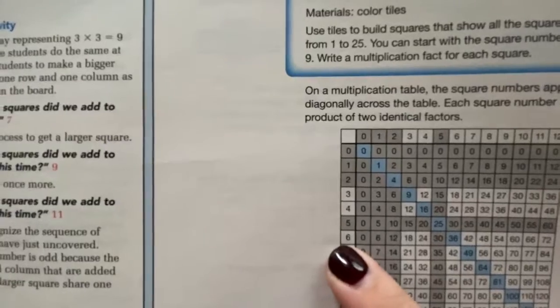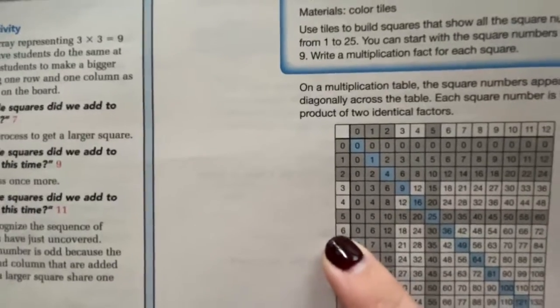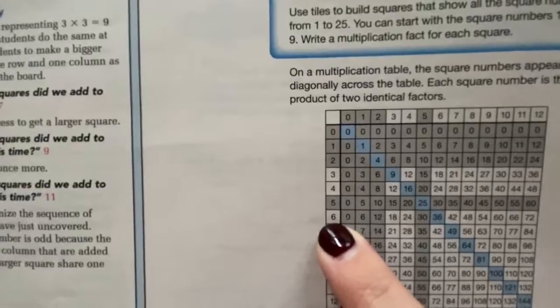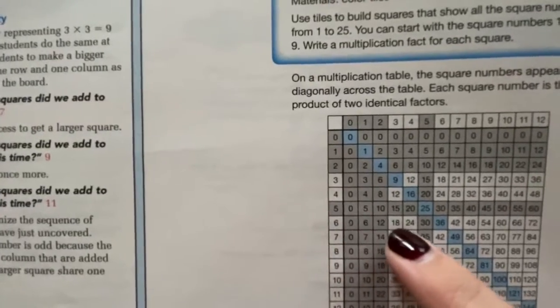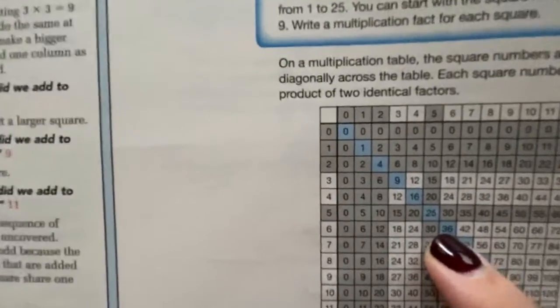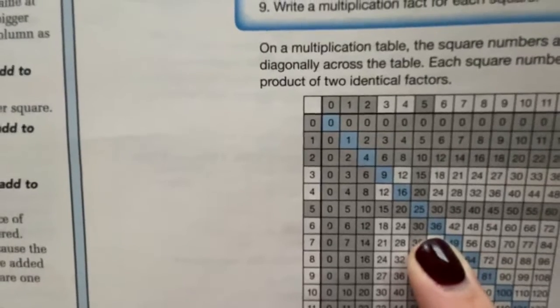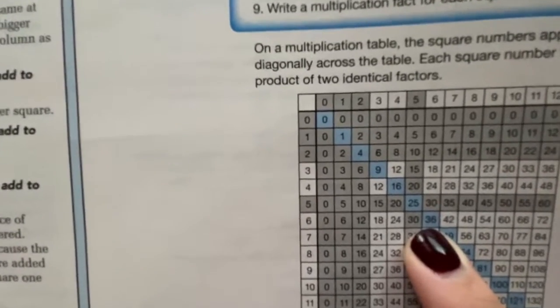If we were to look at what 6 times 6 would be, well, you'd find the 6 on your multiplication table. You'd go all the way across. And there you have it. There is our product. 6 times 6 is 36.